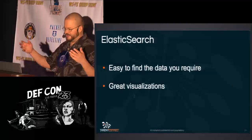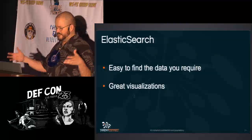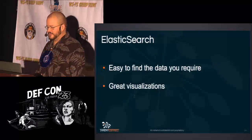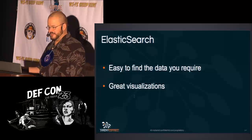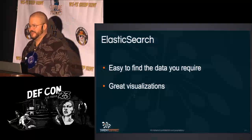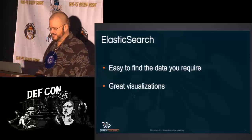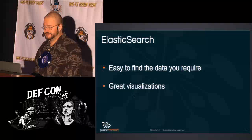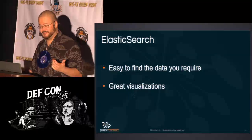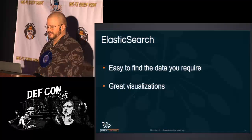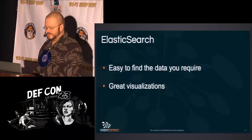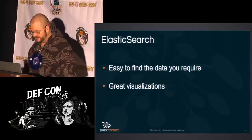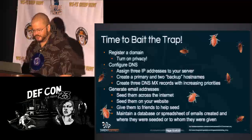After you've generated the JSON blob for the header, put it into Elasticsearch, create an index, set the type — I just call it 'email' as the type and 'emails' as the index. Then you can use Kibana to do visualizations on the data you've jammed into Elasticsearch.